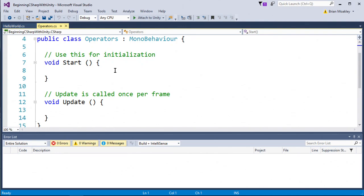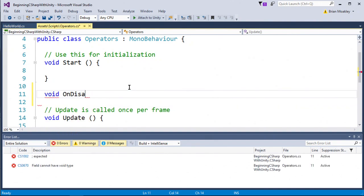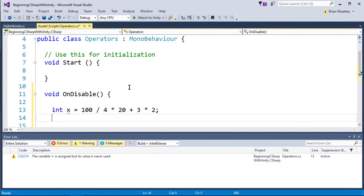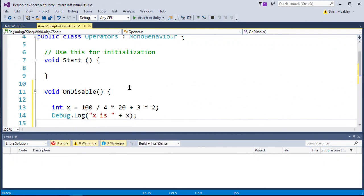Now, you've already seen in this series how addition with strings and additions with numbers work. One thing I think it's important to highlight is the order of operations. And what we're going to do is create a large statement. So this statement is a little bit ridiculous. As you can see, we have lots of operations going on in this one place. We have 100 divided by 4 times 20 plus 3 times 2.